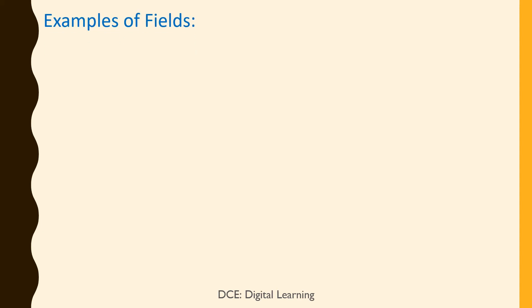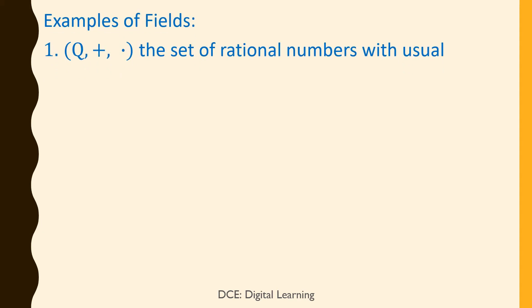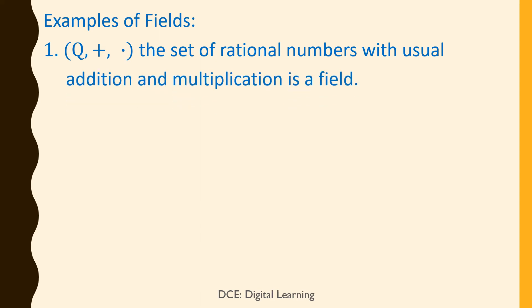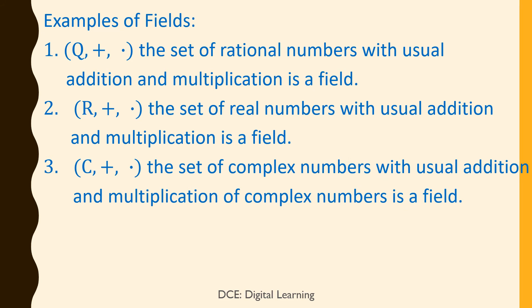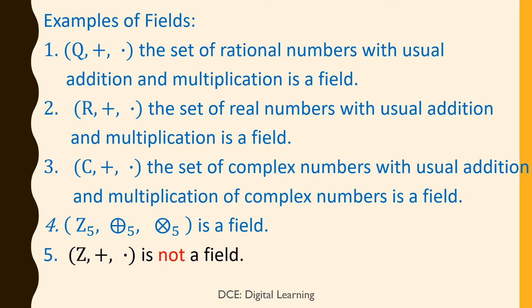Examples of fields. 1. Q (plus, dot), the set of rational numbers with usual addition and multiplication, is a field. 2. R (plus, dot), the set of real numbers with usual addition and multiplication, is a field. 3. C (plus, dot), the set of complex numbers with usual addition and multiplication, is a field. 4. Z₅ with addition modulo 5 and multiplication modulo 5 is a field. 5. Z (plus, dot) is not a field.